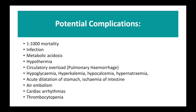Exchange transfusion is not without risk. When taking consent, we have to say it is associated with about a one in a thousand mortality. There is the risk of infection, metabolic acidosis, hypothermia, and circulatory overload which can cause pulmonary haemorrhage. Babies can get hypoglycaemic, hyperkalaemic, hypocalcaemic, or hypernatraemic. There can be acute dilatation of the stomach or ischaemia of the intestine, air embolism, cardiac dysrhythmias, and if a lot of the baby's blood is replaced with donor blood, you can end up quite thrombocytopenic.